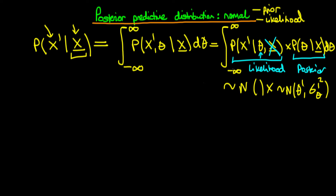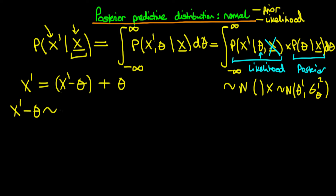Again, we're going to use the cheat we used before, which is to write x-primed as equal to (x-primed minus theta) plus theta. Trivially this is true, because the thetas just cancel out. We know that x-primed minus theta is going to be normally distributed with a mean of zero and a variance of sigma-squared-x, because theta removes the fact that x-primed is itself normally distributed with mean theta. We don't need to worry about sigma-squared-theta here since we're assuming we know theta, so we're just left with the imprecision in x, which is sigma-squared-x.